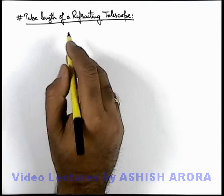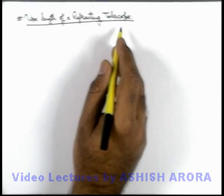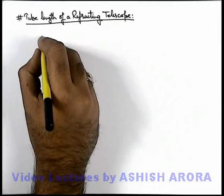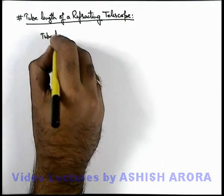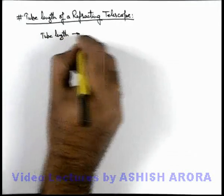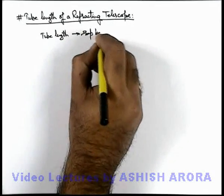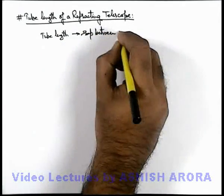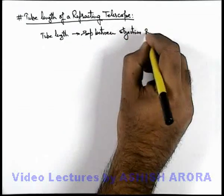Let us now study about the tube length of a refracting telescope. Again, in case of refracting telescope, the tube length is the separation between objective and eyepiece lens.